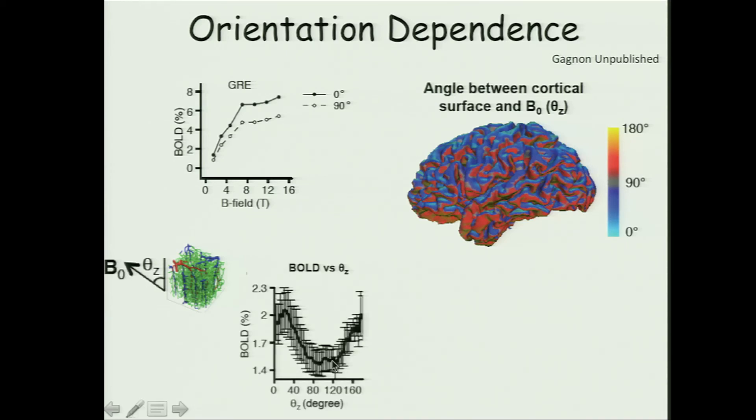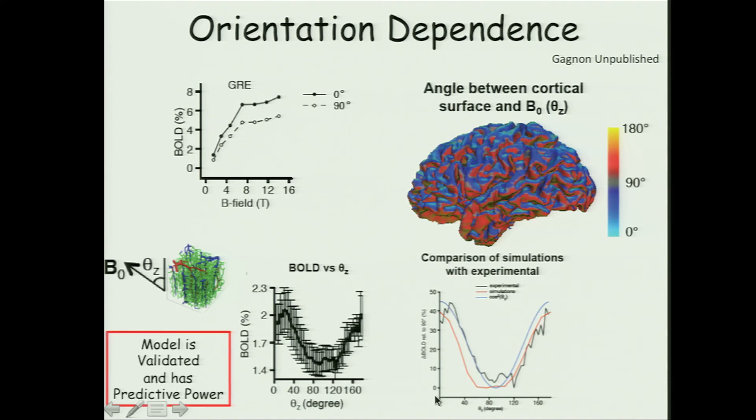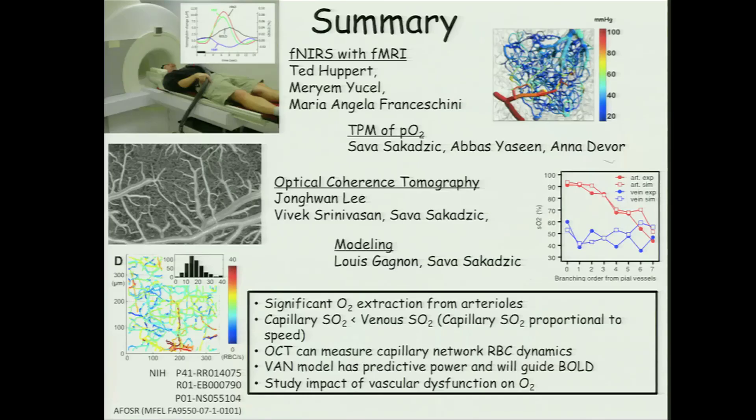And then we were able to plot the BOLD signal change versus angle with respect to the magnetic field. And lo and behold, we saw this 40% signal change that was predicted by the model. So we have this physiological model that has predictive power and can really help us now better quantitatively interpret fMRI, and will be very useful for developing new MRI methods to quantify cerebral oxygenation.